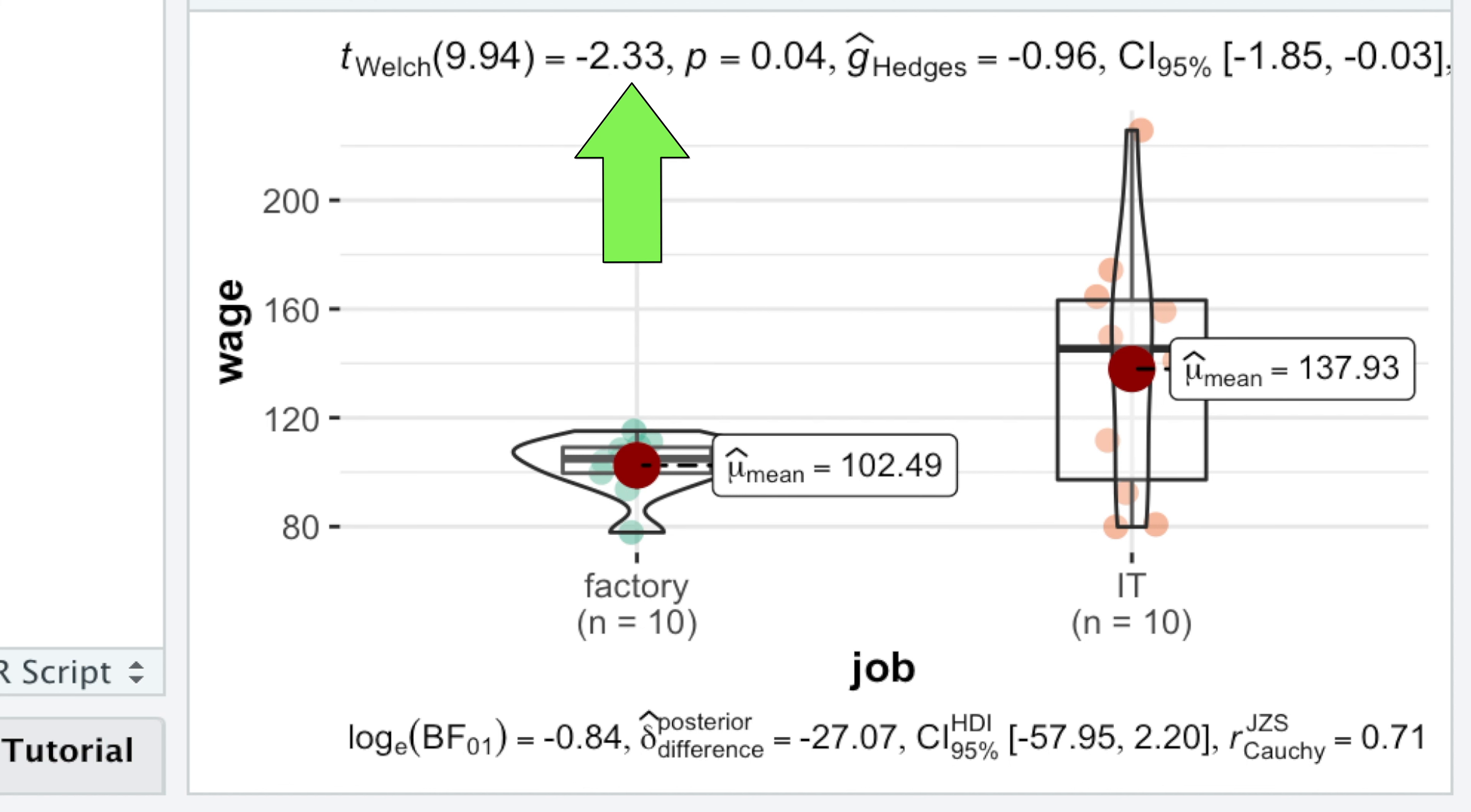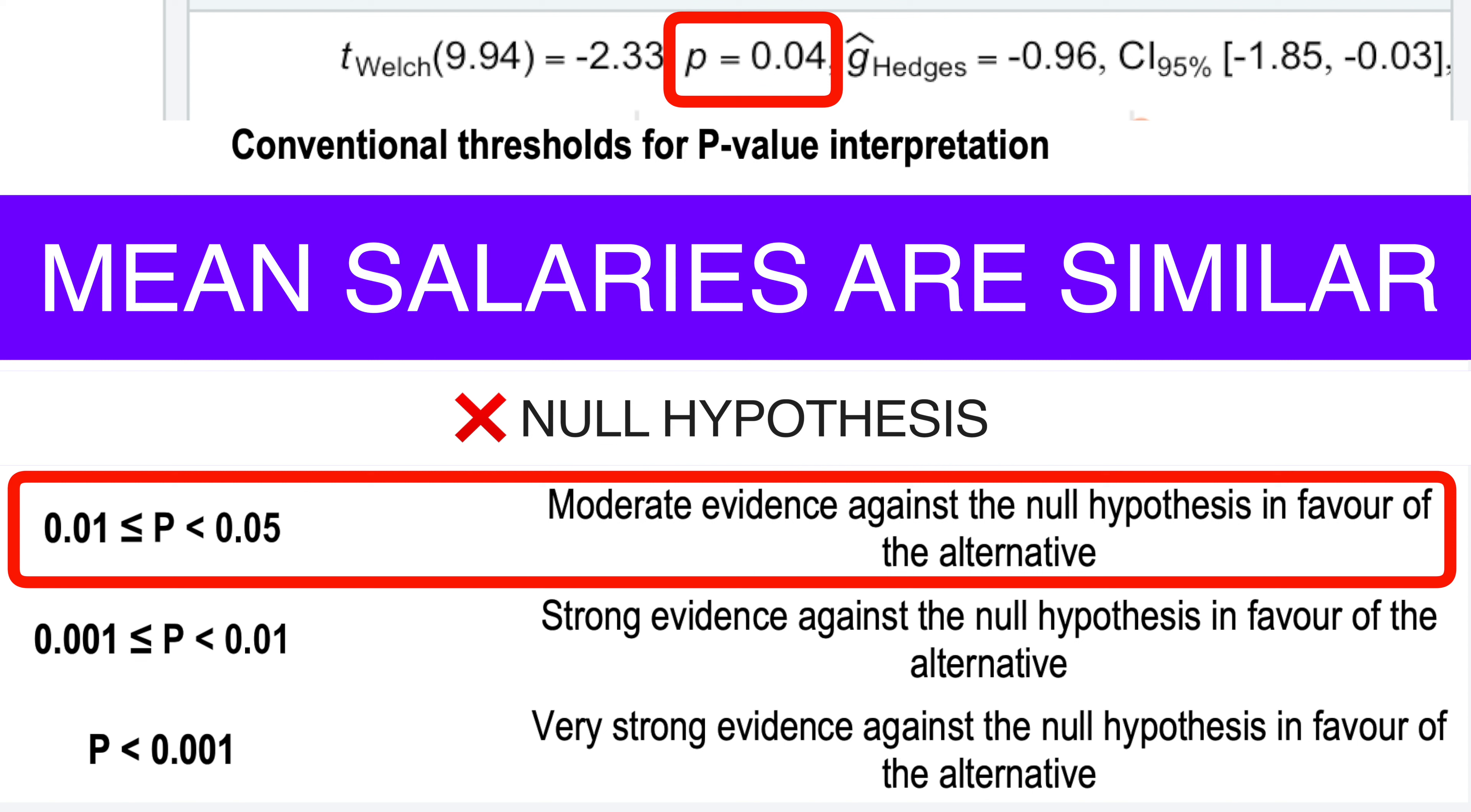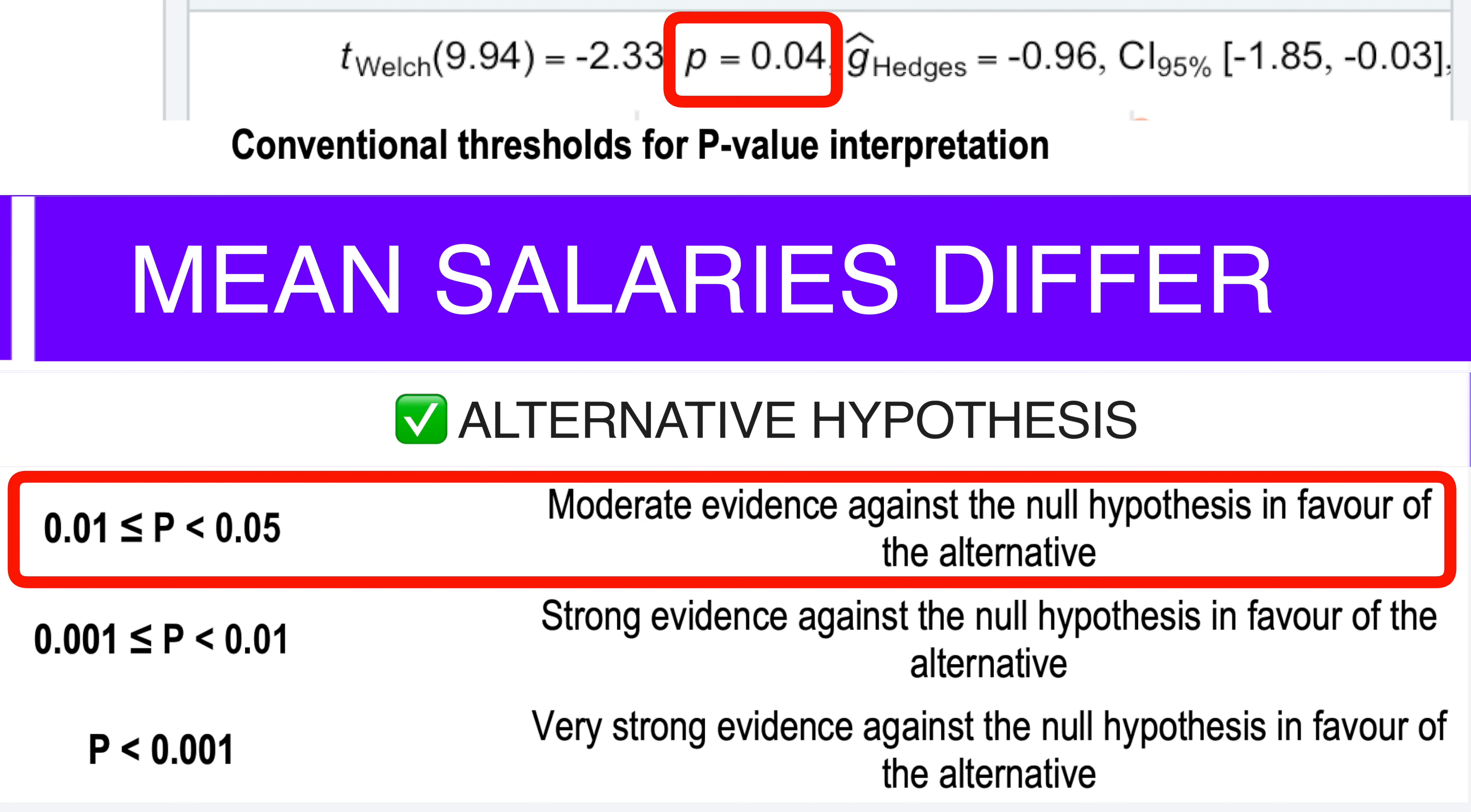That's why t-value and the degrees of freedom were previously used to get a p-value. But nowadays, every software delivers p-values by default. Our p-value of 0.04 shows a moderate evidence against the null hypothesis that mean salaries are similar in favor of the alternative hypothesis that average salaries differ.